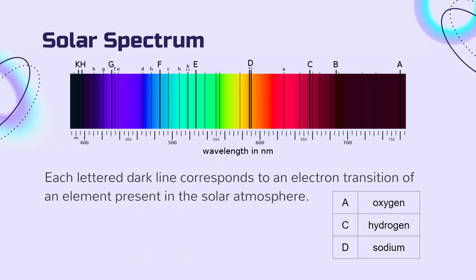Here is an example of an absorption spectrum — the absorption spectrum of our Sun. Each of the lettered dark lines corresponds to an electron transition of an element present in the atmosphere of our Sun. For example, absorption line A is due to the presence of oxygen in the Sun's atmosphere. Similarly, C is caused by the presence of hydrogen, D is caused by the presence of sodium, and so on.